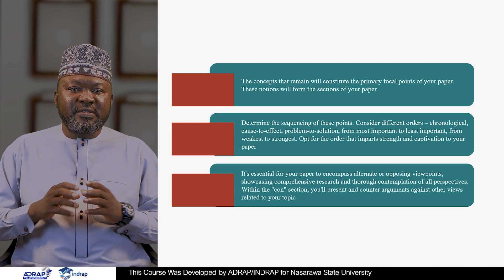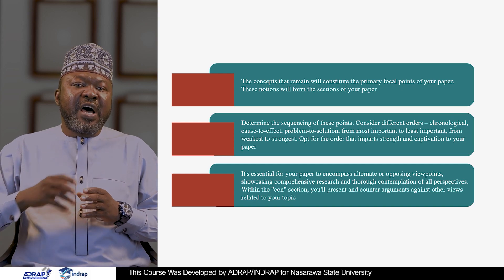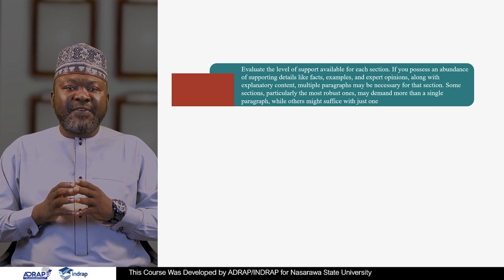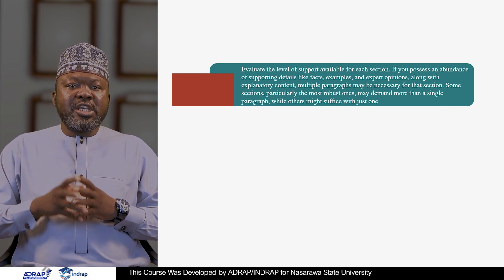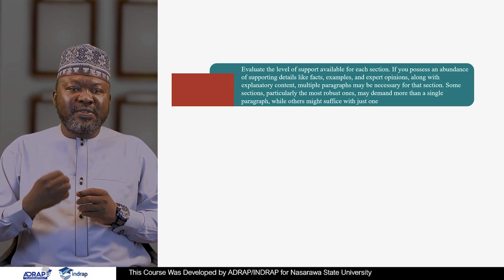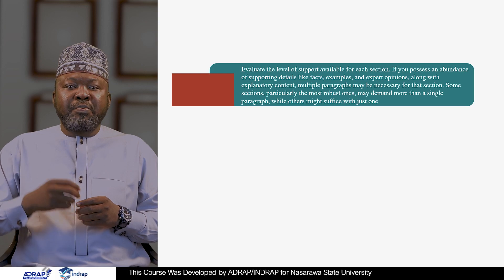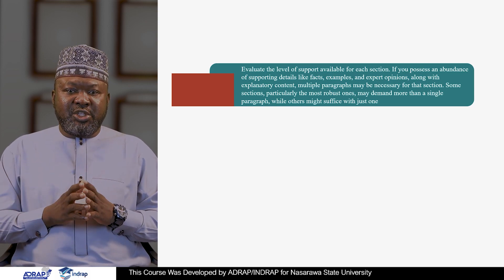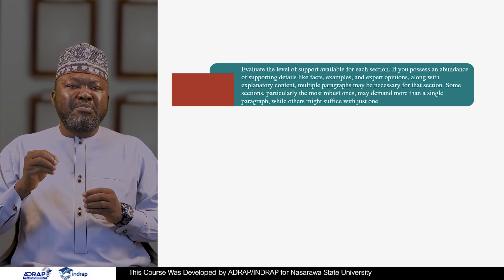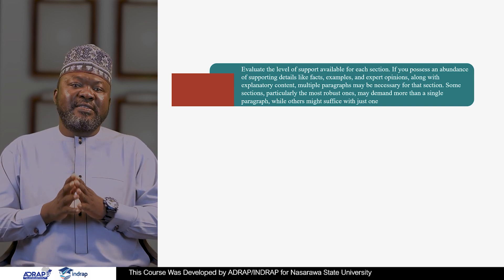Within the CON section, you will present and counter arguments against other views related to your topic. Evaluate the level of support available for each section. If you possess an abundance of supporting details — like facts, examples, and expert opinions along with explanatory content — multiple paragraphs may be necessary for that section. Some sections, particularly the most robust ones, may demand more than a single paragraph, while others might suffice with just one.